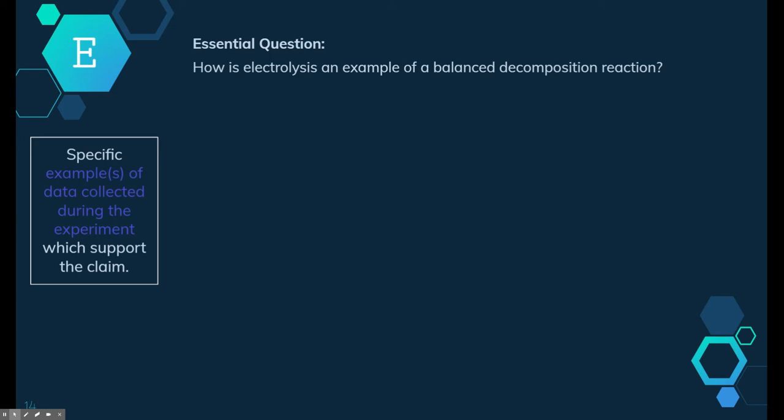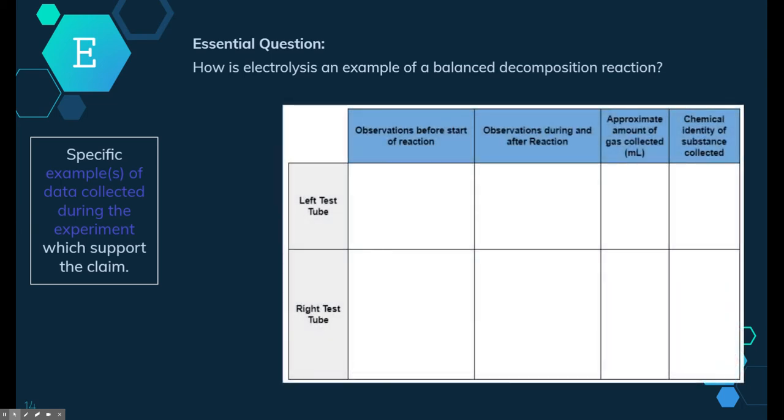Let's move on to evidence. The evidence statement is specific examples or examples of data collected during the experiment, which support your claim. So, again, relating the essential question, we're going to look at the data table, specific evidences that we collected, and we're going to relate that to our claim.